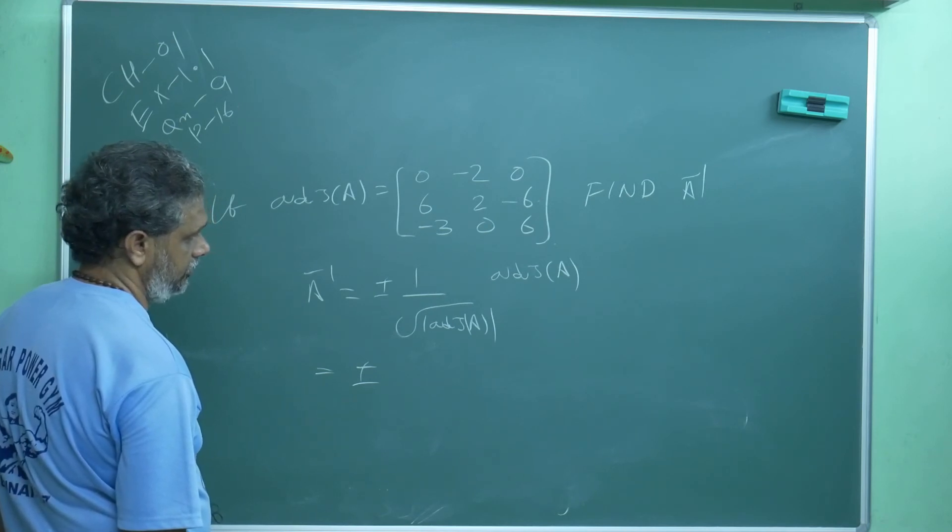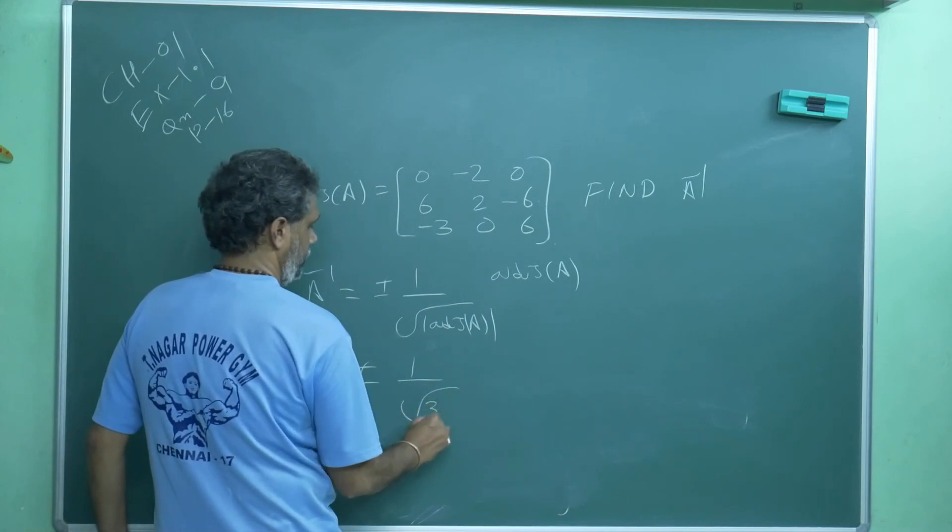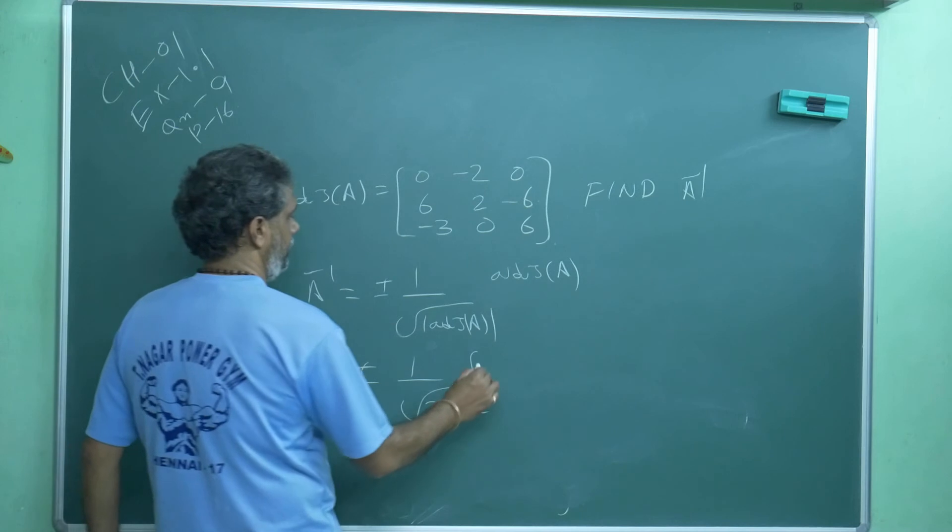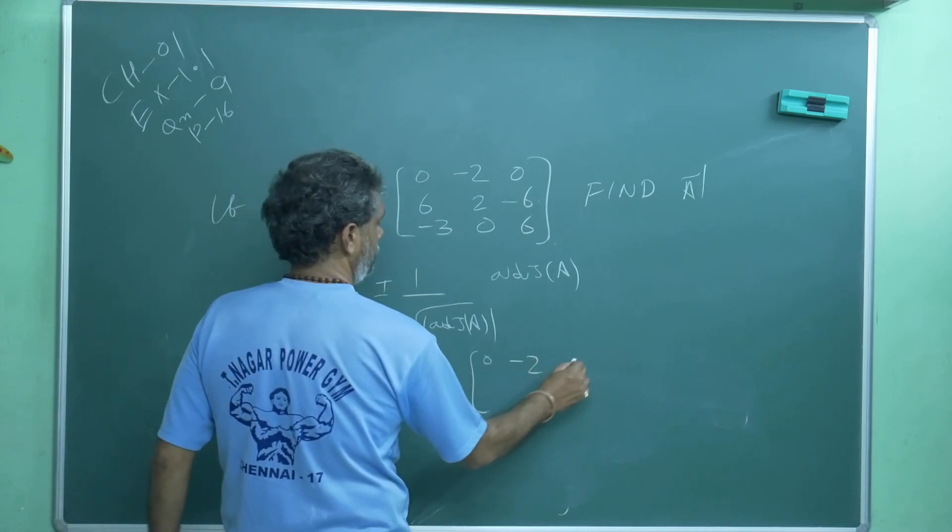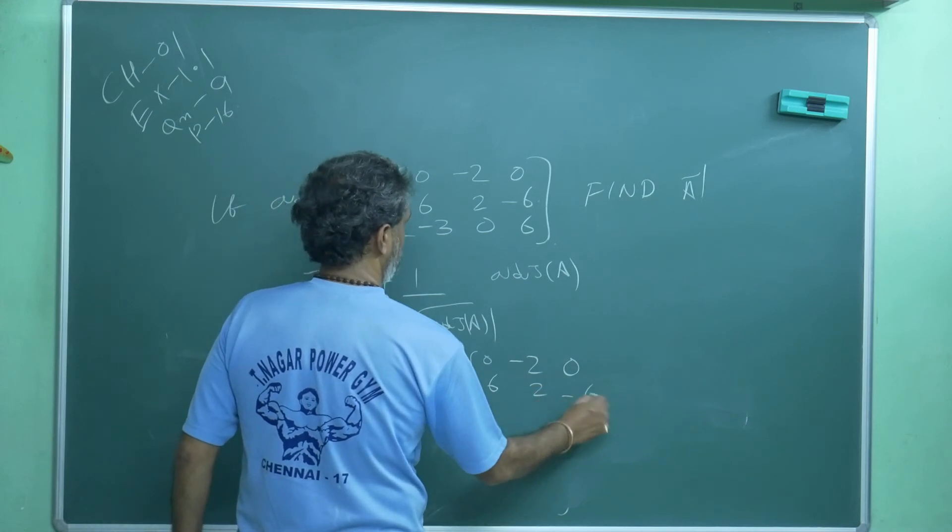36, I hope 36. Then adjoint of A, already in my hand: 0, minus 2, 0, 6, 2, minus 6.